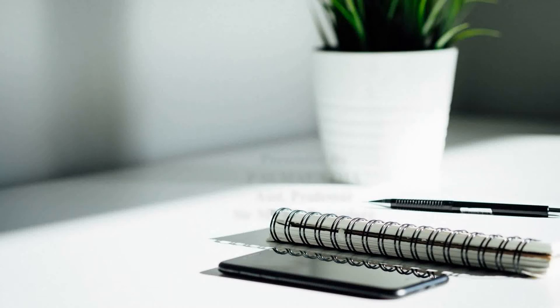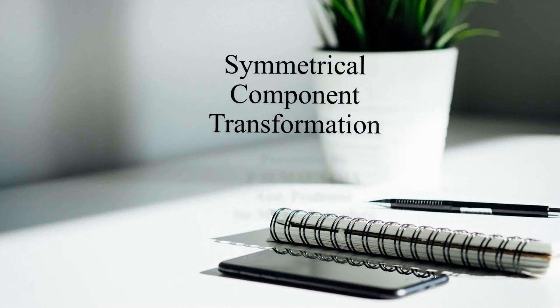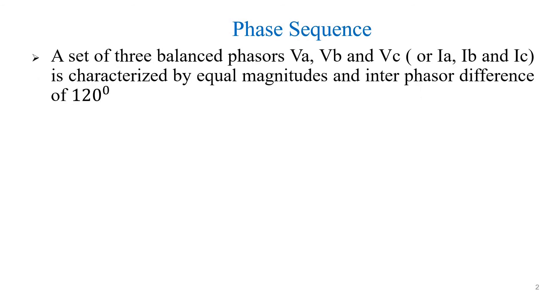Hello everyone. Today we are going to see about symmetrical component transformation. Phase sequence: a set of three balanced phasors Va, Vb, Vc or the current phasors Ia, Ib, Ic are characterized by equal magnitudes and the inter-phasor difference of 120 degrees.